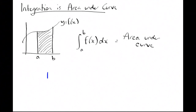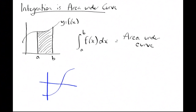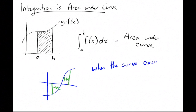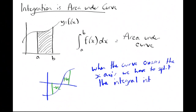The problem is if my curve goes through the x-axis, the parts underneath the x-axis will give a negative answer. The integral will be negative, but obviously the area has to be positive, so you have to watch out for it. When the curve crosses the x-axis, we have to split the integration into two parts.